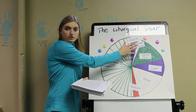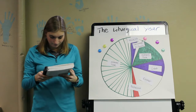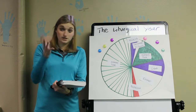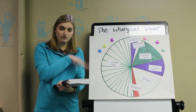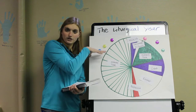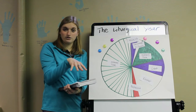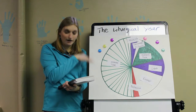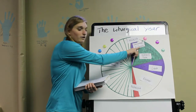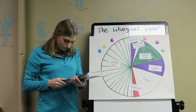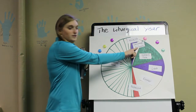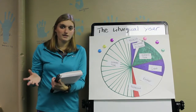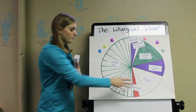Then there's the Christmas cycle, composed of Advent, Christmas, and Epiphany. The Christmas cycle is based on the solar calendar — the sun. Christmas always falls on December 25. Advent begins four weeks prior to that. That's why we have the four candles of Advent, which we talked about in our online children's ministry videos this past Advent season. Epiphany is 12 days after Christmas, on January 6. And that's always the same, because it's based on the solar calendar rather than the lunar one.